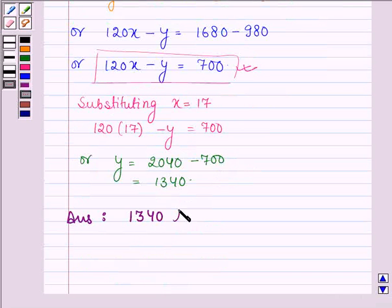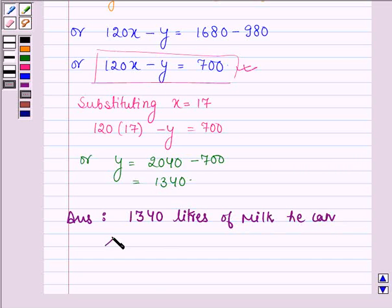Hence our answer is 1340 liters of milk he can sold at rupees 17 per liter. So this completes the solution, hope you have understood it. Take care and have a good day.